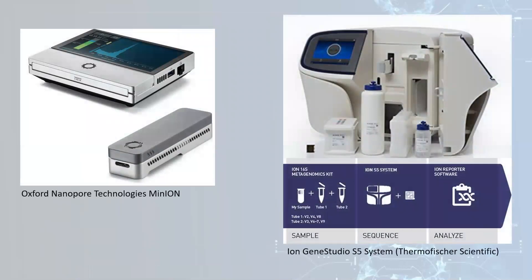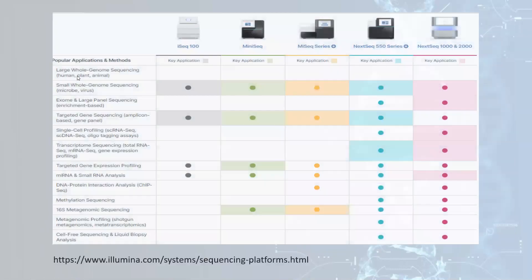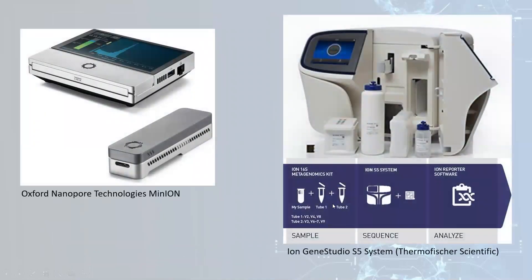There is also Oxford Nanopore Technologies, which produces sequencers even smaller than the MiSeq and are arguably easier to use. The IonGene Studio S5 system by Thermo Fisher is another option — you put your sample in, close the cap, place it on the system, run the software, and you have your answer.